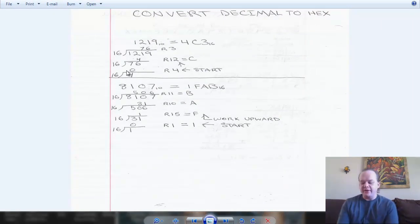This is the same. If you watch the binary tutorial, this is the same actually for any weighted number system. If you want to convert it to decimal, here's how you do it. If you want to convert to the hexadecimal or binary, this is how you do it. 1219 equals 4C3 in base 16. So 1219 divided by the base, 16 gives you a remainder of 3.